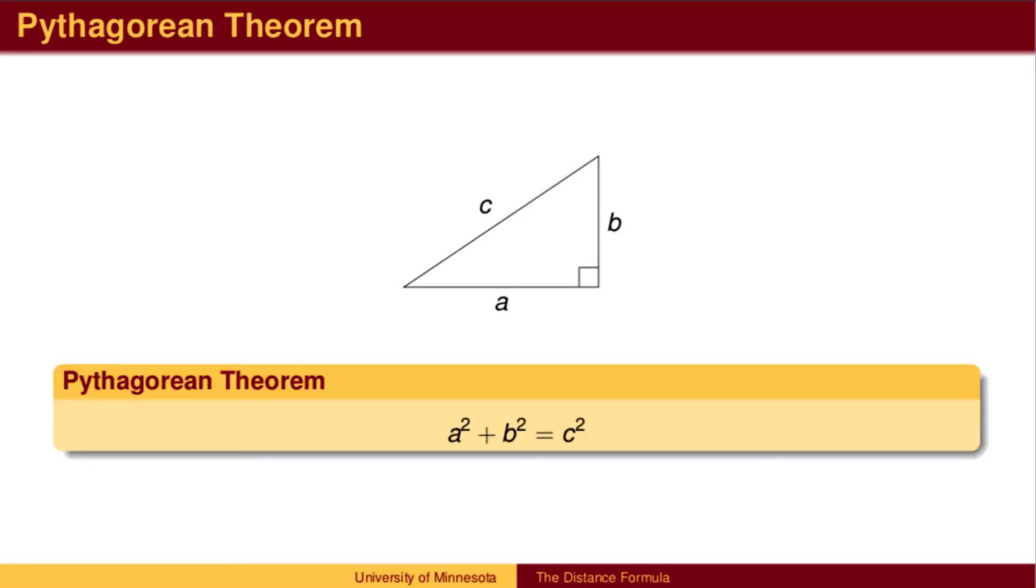Recall the Pythagorean Theorem for a right triangle, which finds the length of the hypotenuse, C, given the length of the legs, A and B.